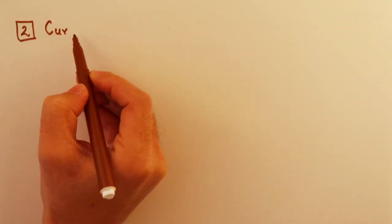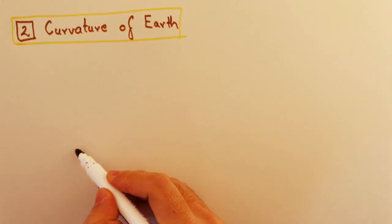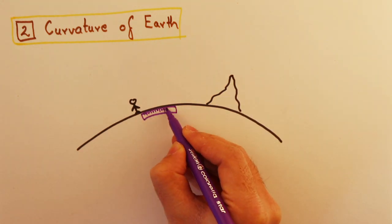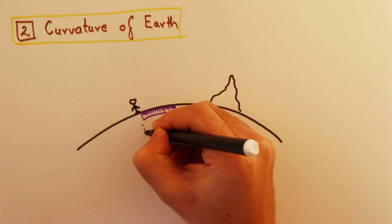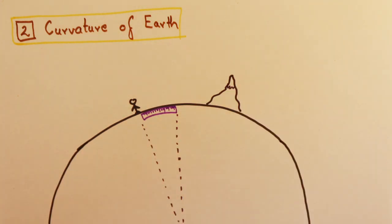Curvature of Earth. Yes, Earth is not flat. It is approximately spherical in shape, so an error is introduced in any significantly large horizontal distance. A correction factor considering the curvature and radius of the Earth has to be added for accurate distance measurements.